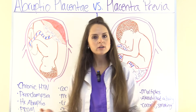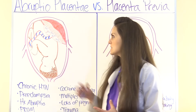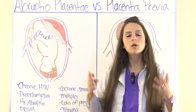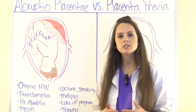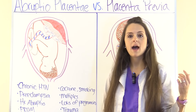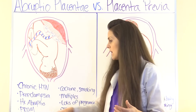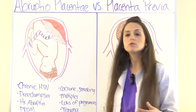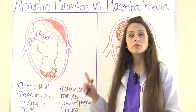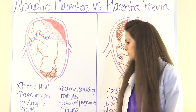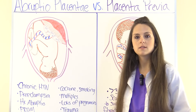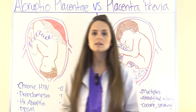Now let's look at causes of Abruptio Placentae. This condition typically occurs in the third trimester. If mom's blood pressure is not being controlled or she has chronic hypertension, it can lead to this. Also the development of preeclampsia, a history of abruption, premature rupture of membranes, cocaine use, smoking cigarettes, carrying multiples like twins or triplets, multiple prior pregnancies, or trauma to the abdomen that caused the placenta to detach.